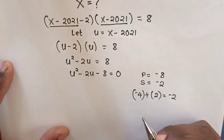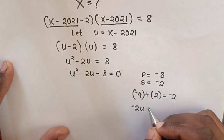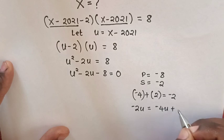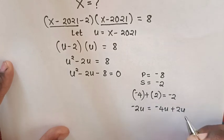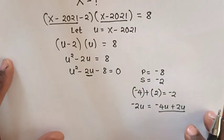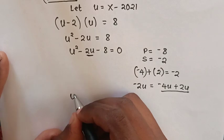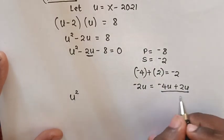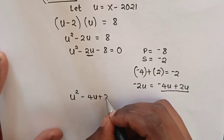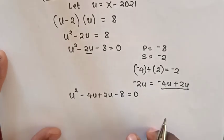Therefore, to get negative 2u as shown here, it will be equal to negative 4u plus 2u. So our equation will be u squared minus 4u plus 2u minus 8 is equal to 0.